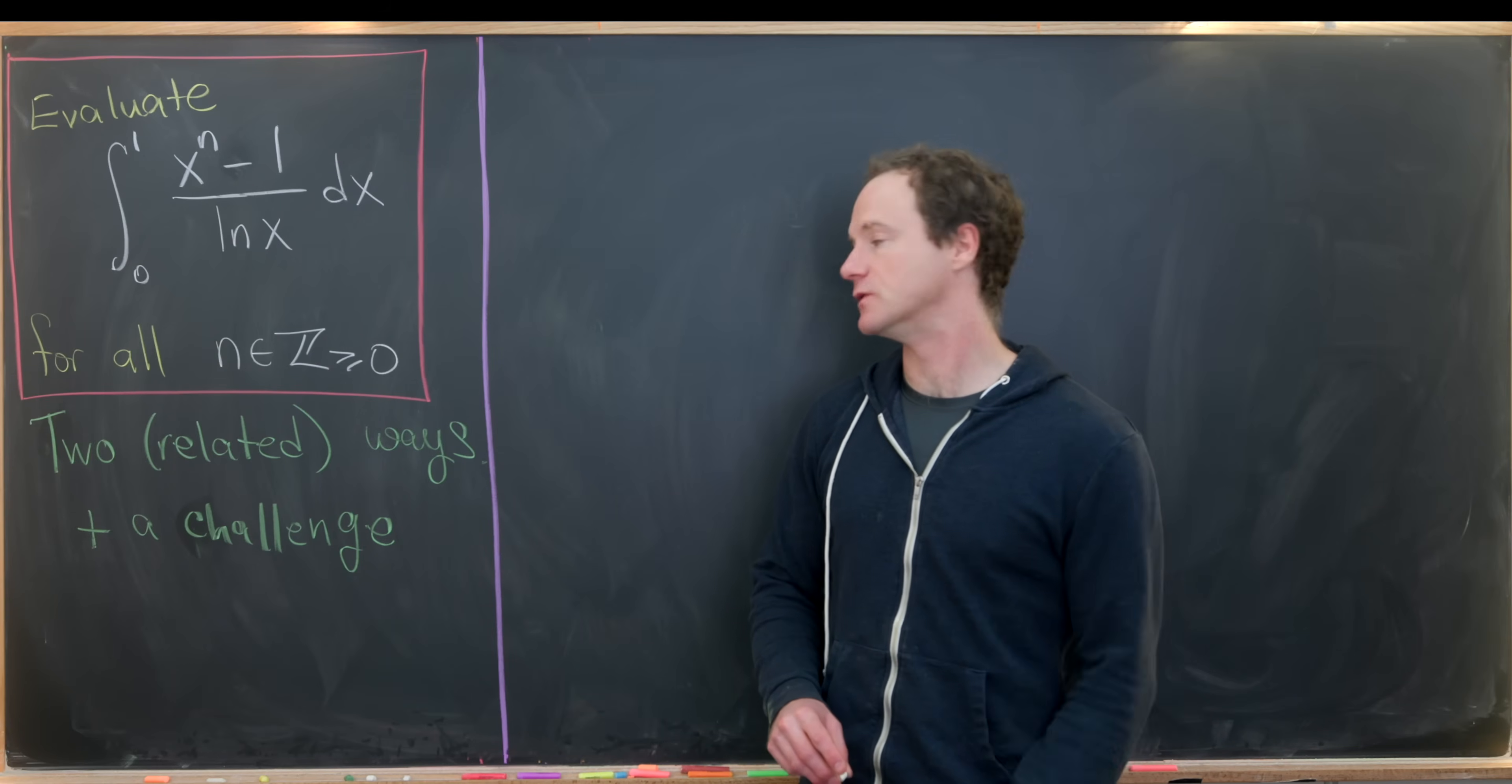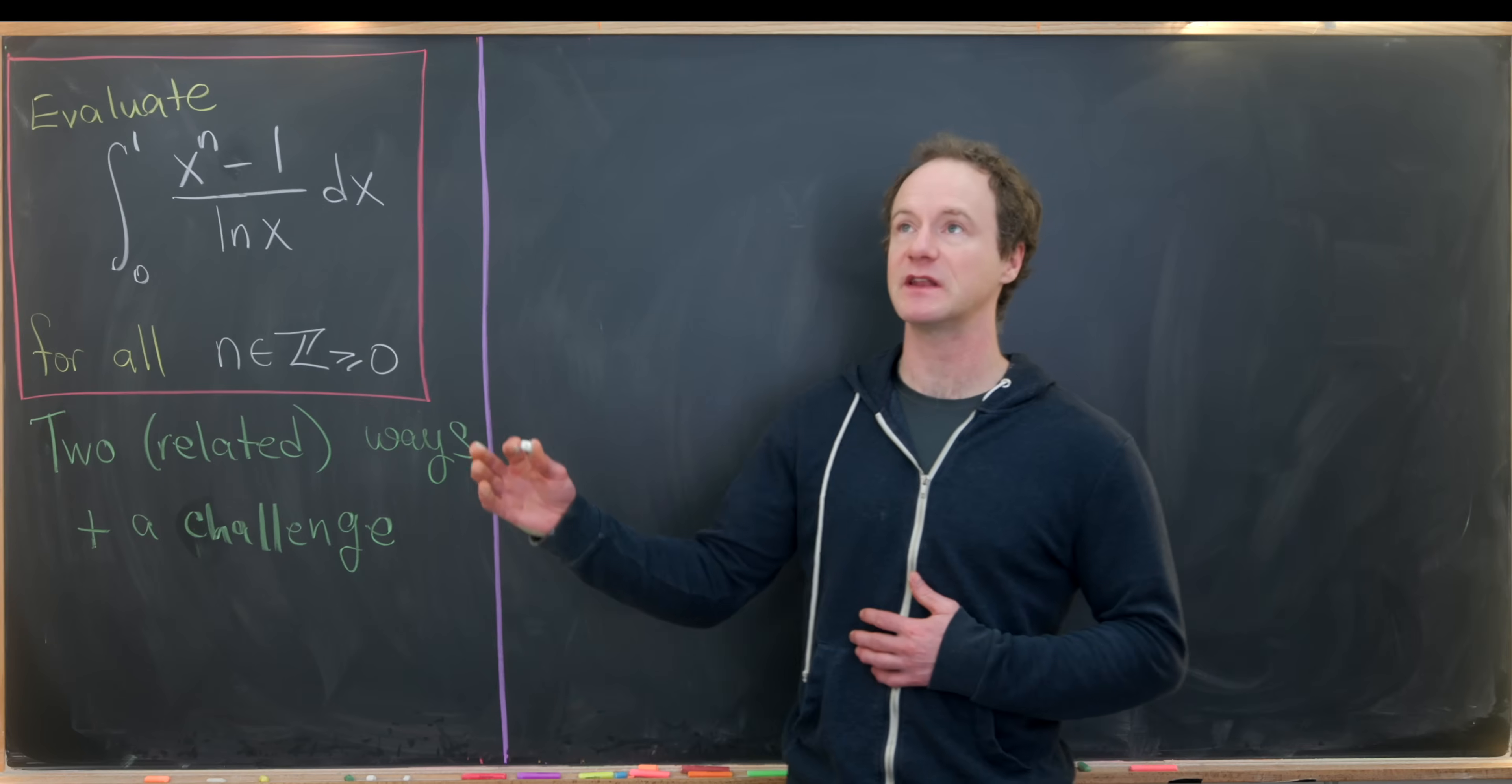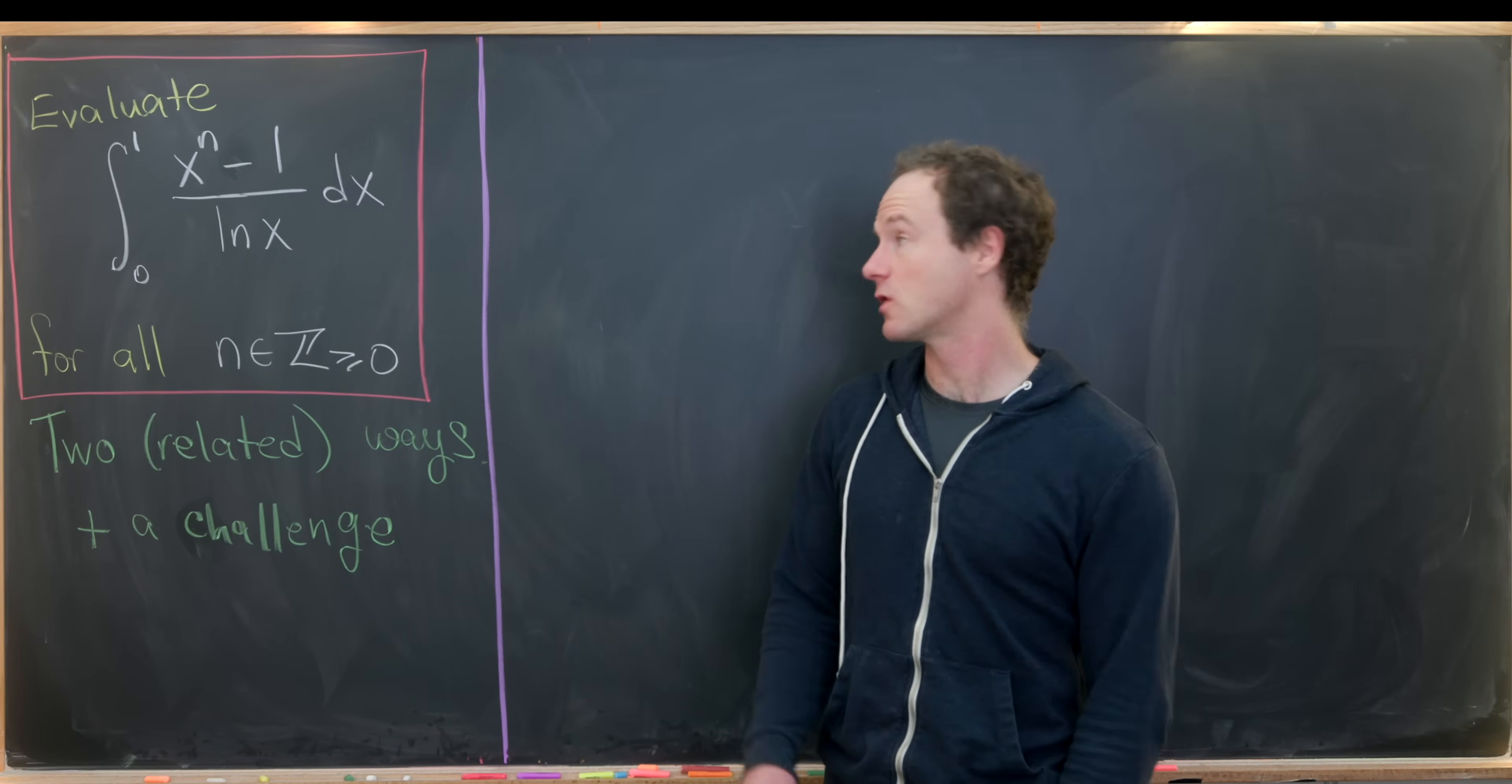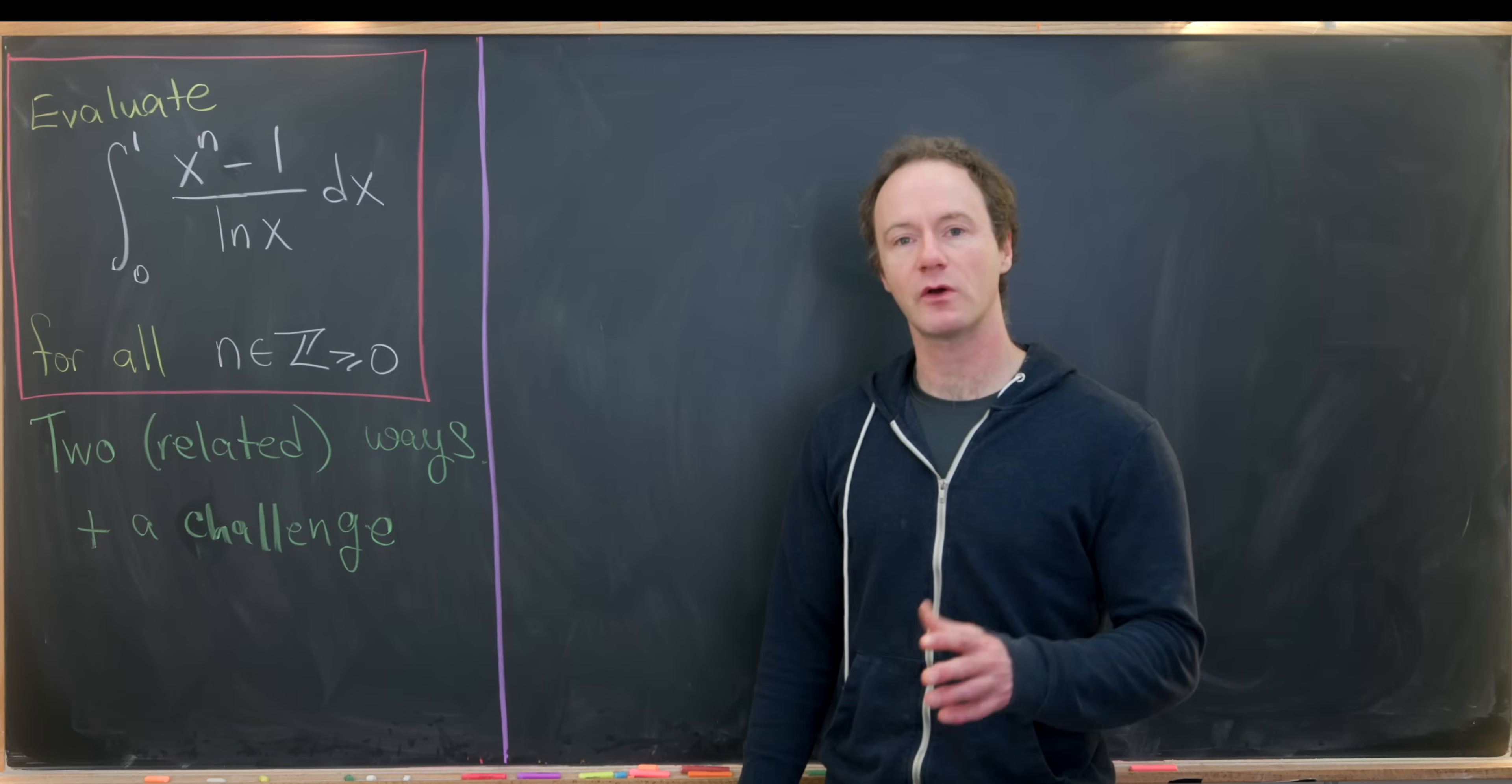Where n is a non-negative integer. So it can be 0, 1, 2, 3, so on and so forth. We're going to do this using two very related methods. In fact, you can prove that the ability to use one of these methods is equivalent to the ability to use the other method, which would be honestly kind of a ridiculously difficult way to calculate this integral. But I think it's a bit of a challenge. I'm not sure it's really reasonable or possible.